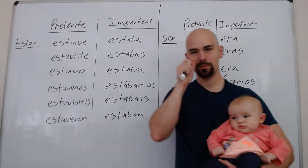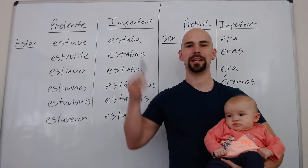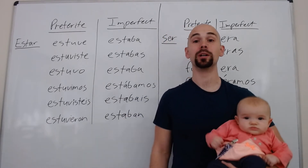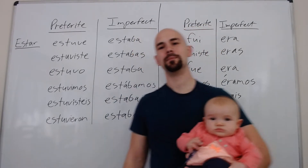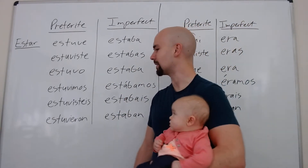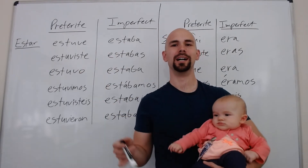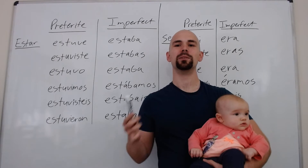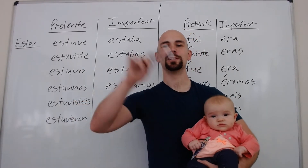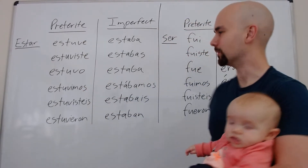The preterite is the simple past — something happened, boom, it's done. It's a finite action, or you're conveying the idea of it being complete. The imperfect is a little harder to wrap your head around — it's more the idea of an ongoing action. Often it's used to set the stage: 'I was cooking when the spoon fell' — 'was cooking' is imperfect, 'fell' is preterite. You can review that on your own.